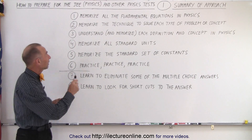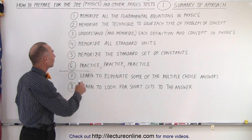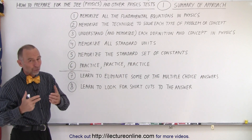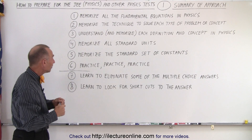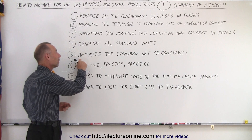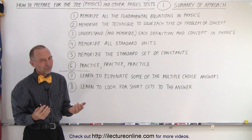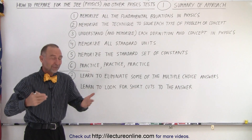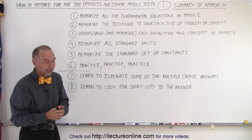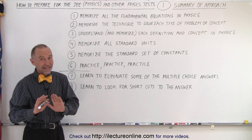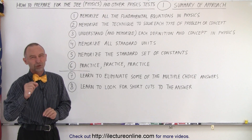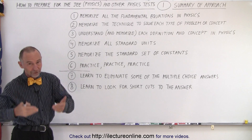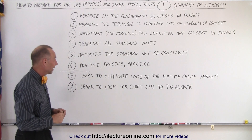Then — and this is specifically important for the JEE tests — you have to memorize all the standard units. Quite often it is necessary to know the various units in order to solve the problem. And number five: memorize the standard set of constants. Most tests will give you the constants, like Planck's constant or the charge on an electron. But on the JEE test, they expect you to know them, so you should memorize the standard set of constants as well — we'll provide a list.